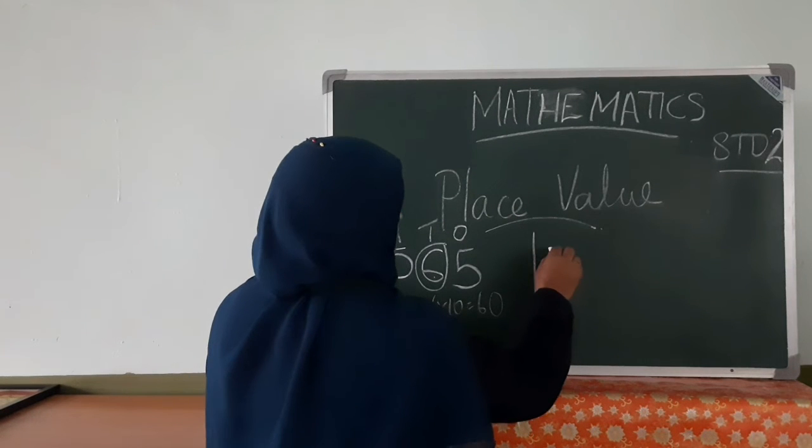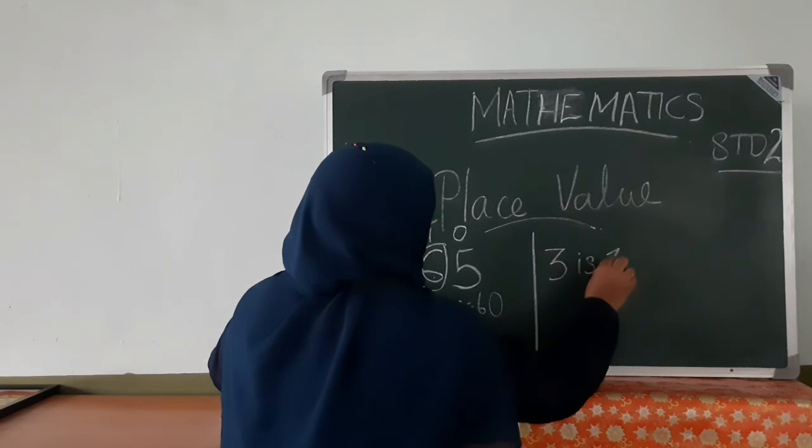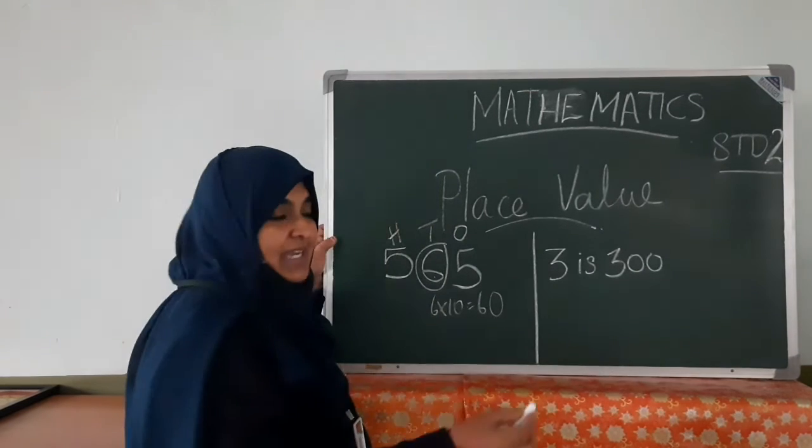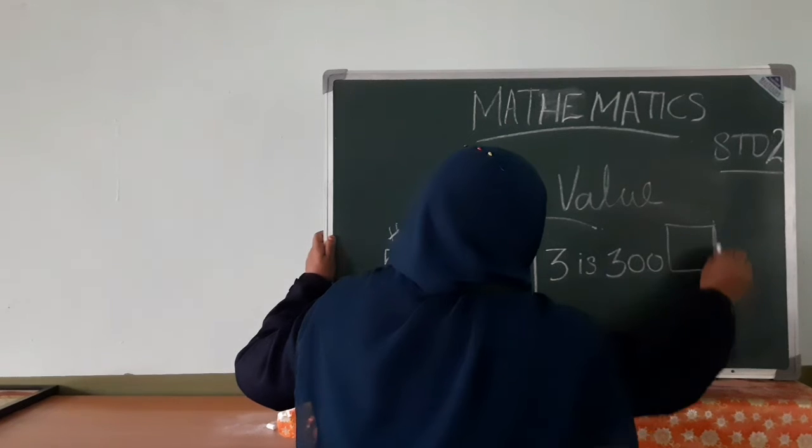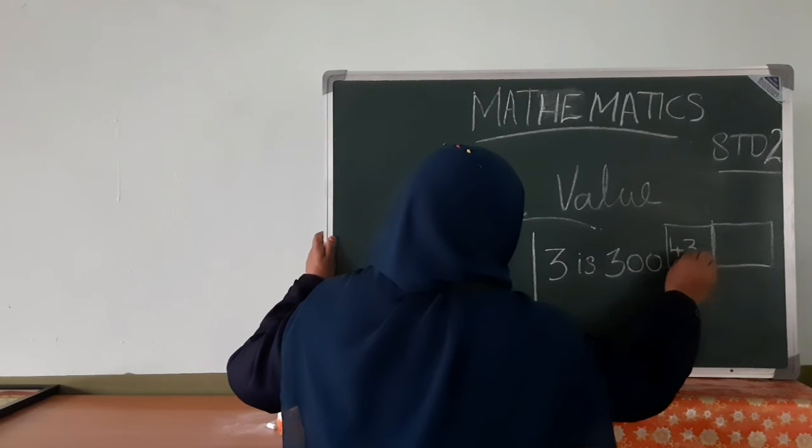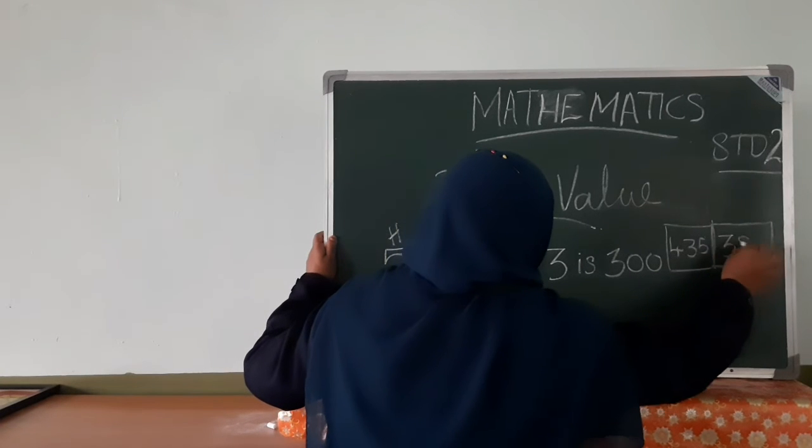Now, find out, three is in three hundred. In which number? You find out. So, I will give you here two numbers. Four hundred thirty-five and three hundred eighty-six.